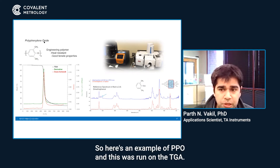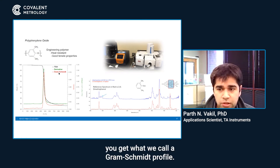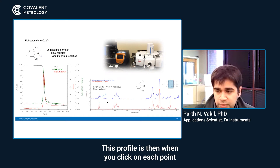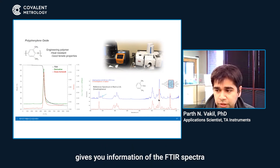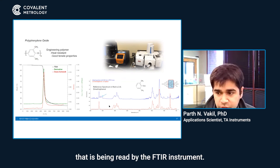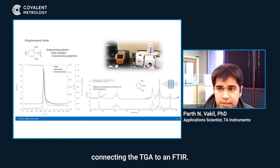Here is an example of PPO, which was run on the TGA. When you do TGA-FTIR, you get what we call a Gram-Schmidt profile. When you click on each point of this profile, it gives you information on the FTIR spectra being read by the FTIR instrument. This way, you can get a lot more insight by connecting the TGA to an FTIR.